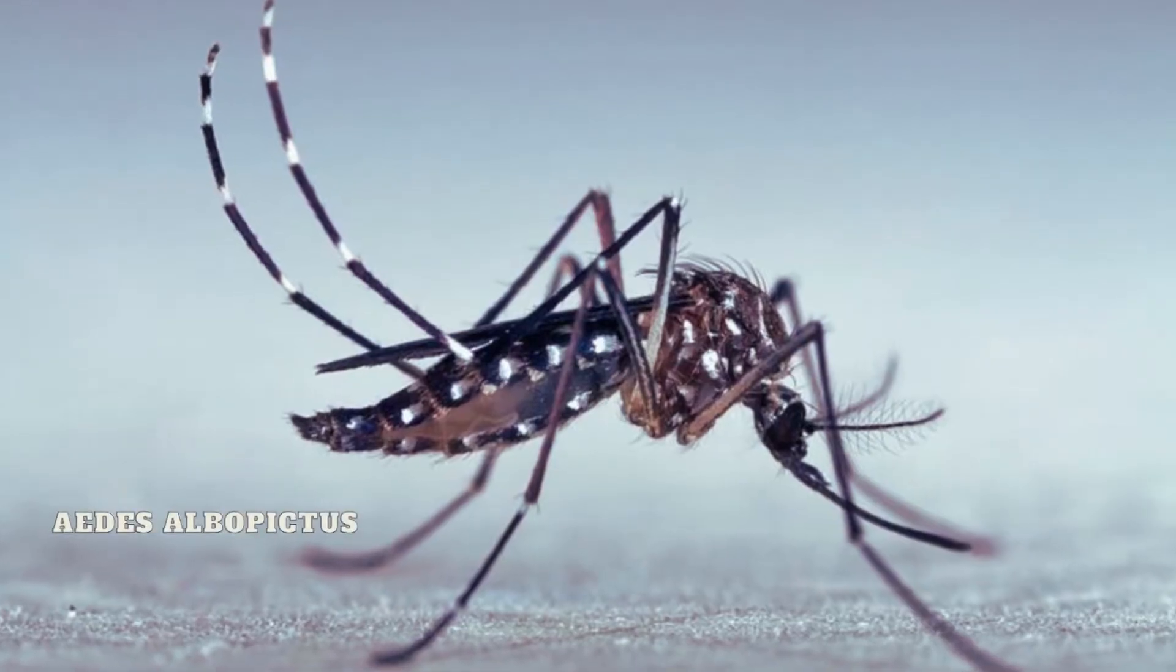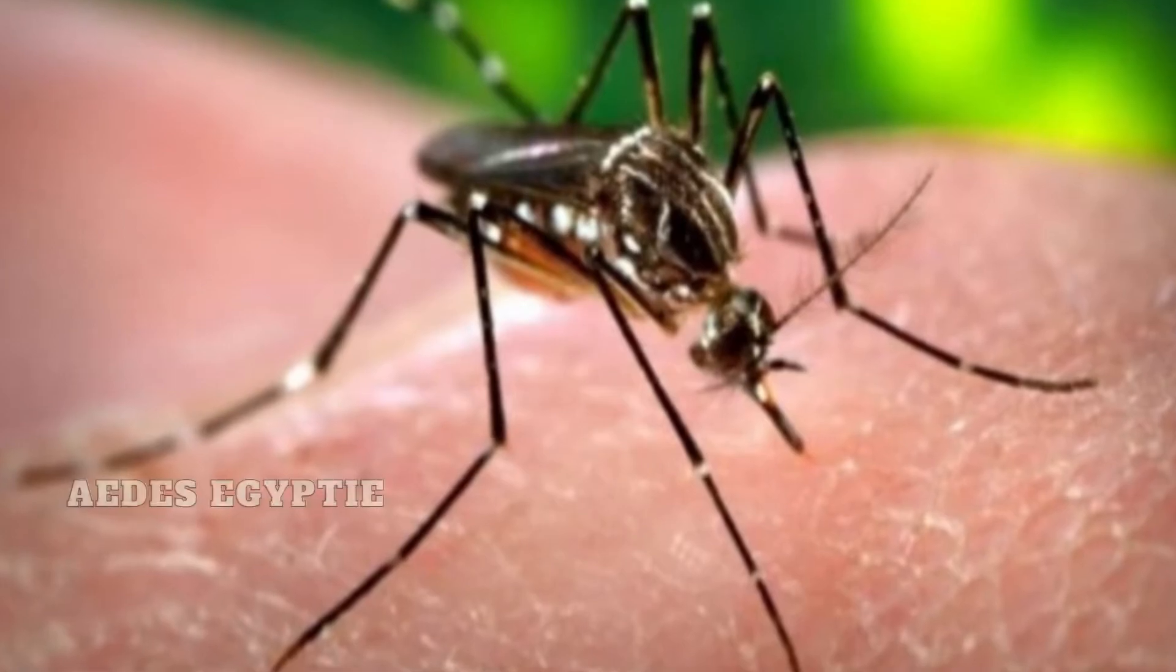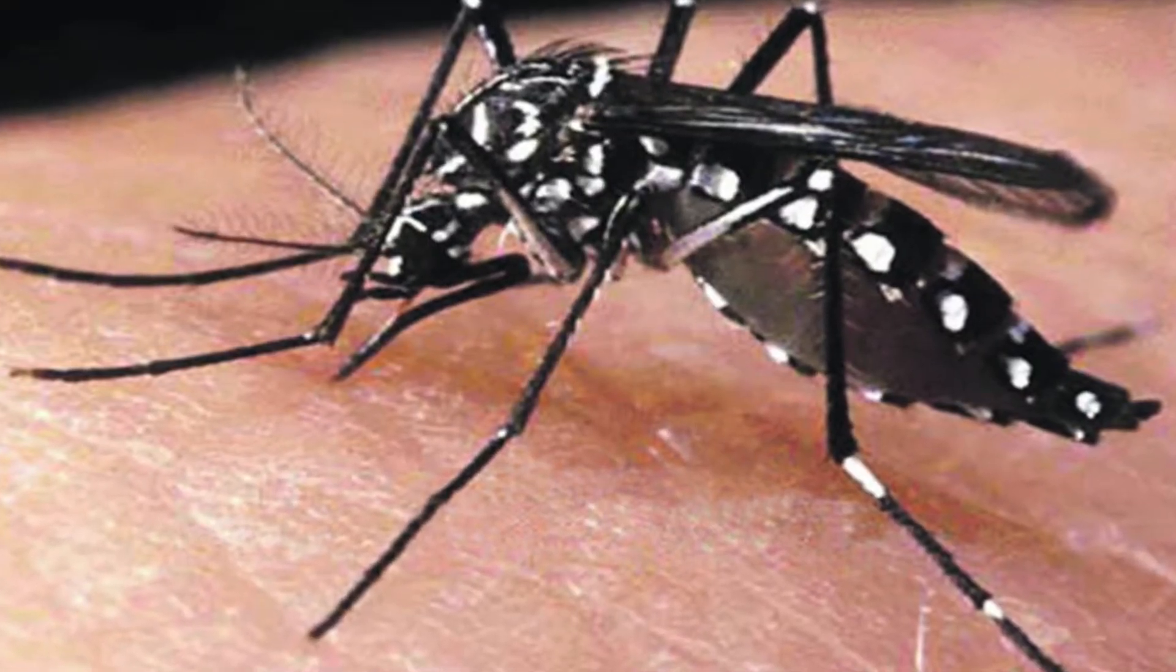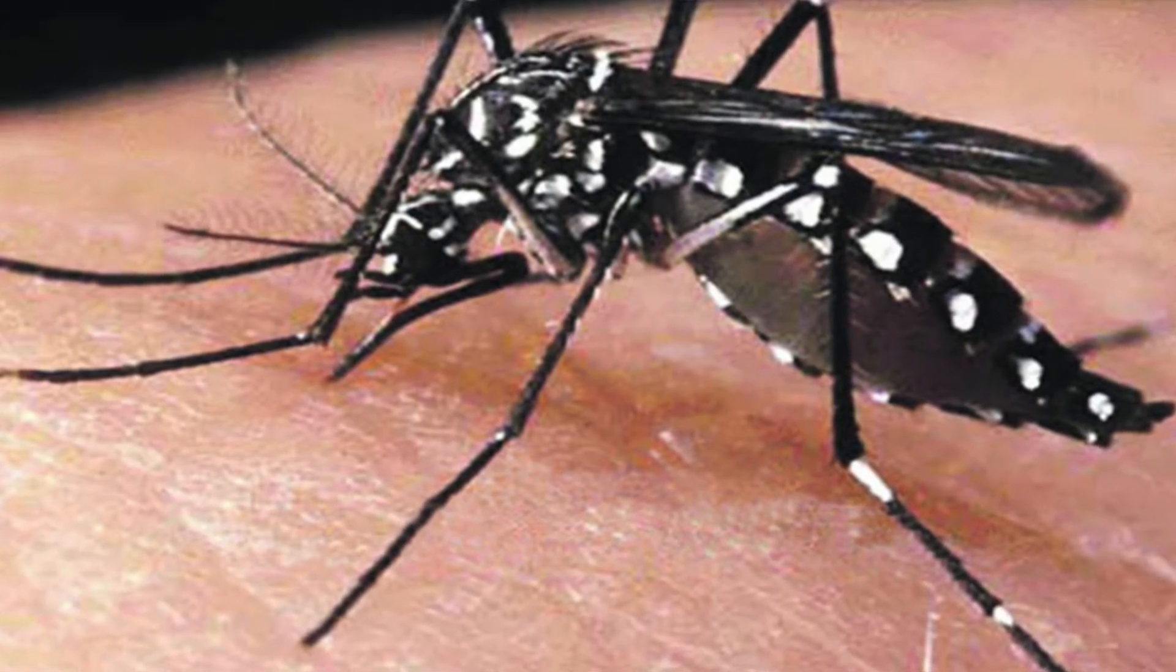Aedes mosquitoes have two types: Aedes albopictus and Aedes aegypti. Aedes are highly invasive. Aedes adults can be simply identified by black color and white markings or spots on their body.